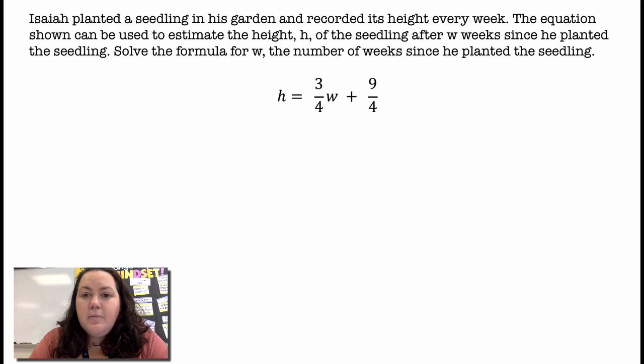I want to get w by itself, so I'm going to get rid of that 9 fourths by subtracting 9 fourths on both sides. So I have h minus 9 fourths equals 3 fourths w. Now I want to get rid of that 3 fourths.